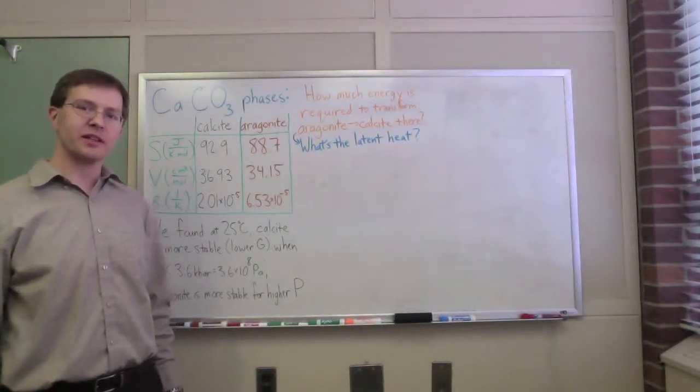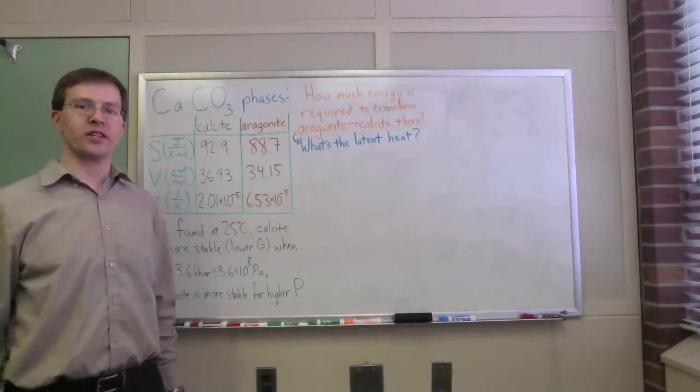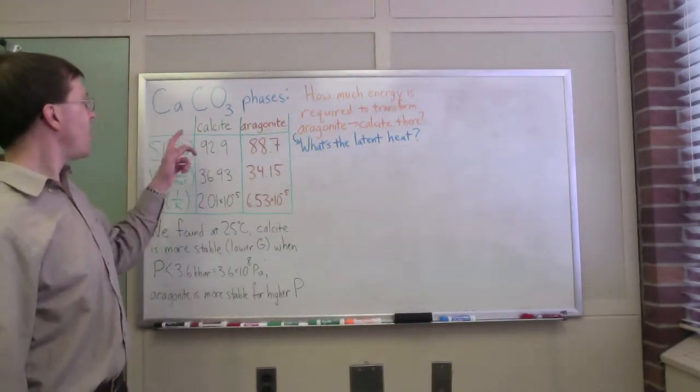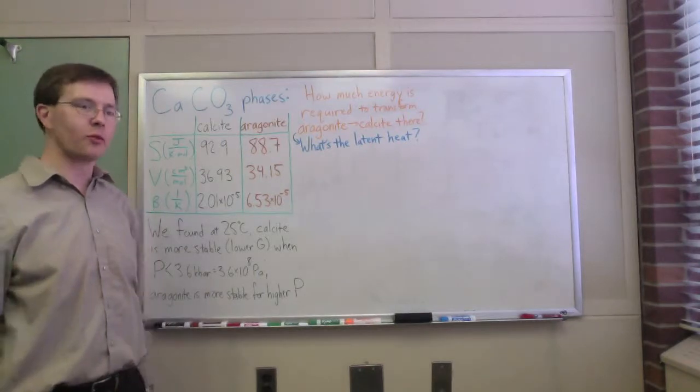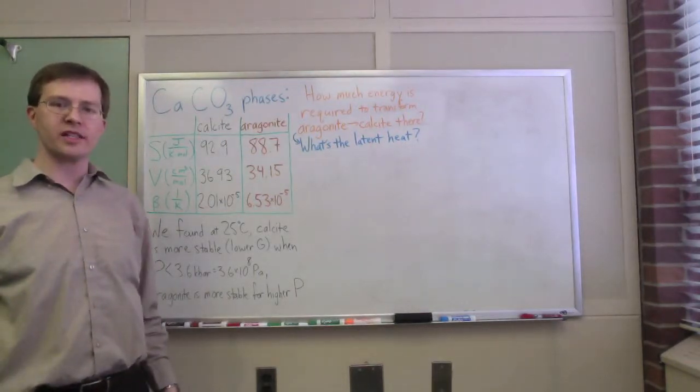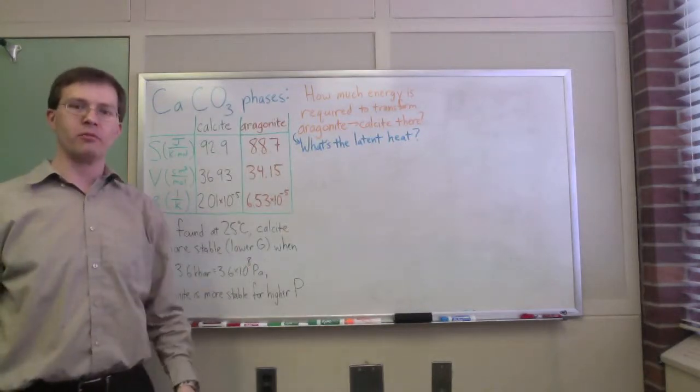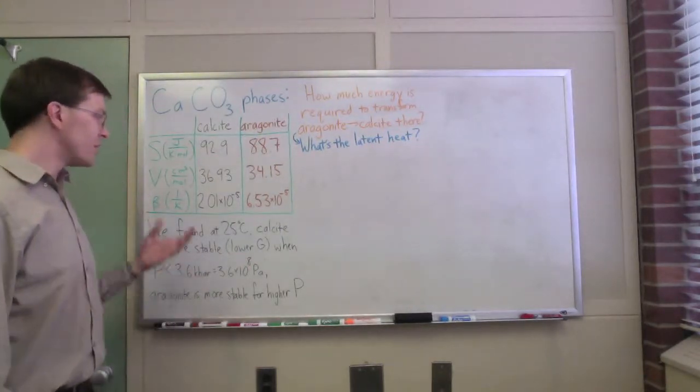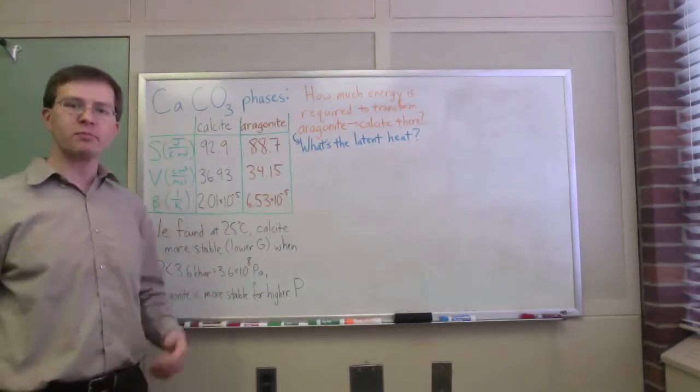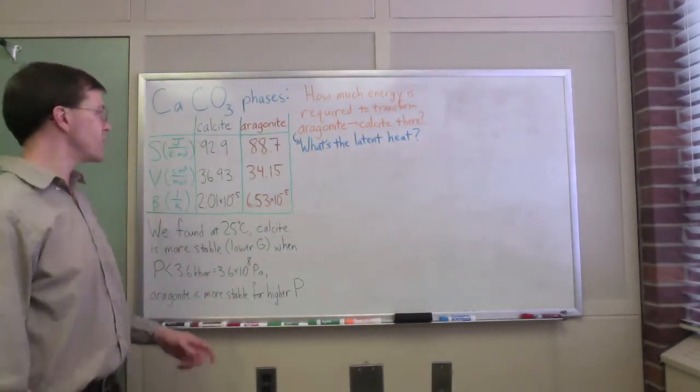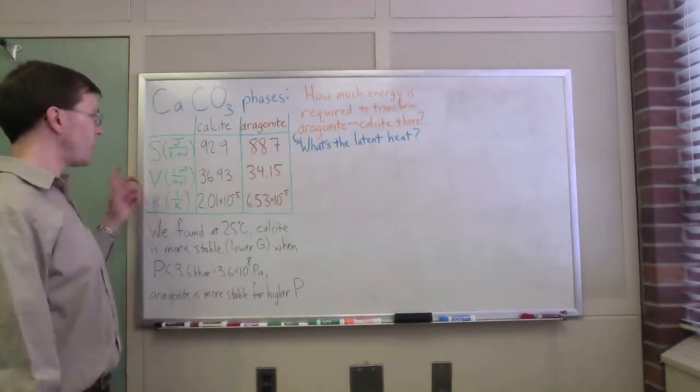In our thermal physics class recently we've been studying phase transitions. In particular, we looked at the phase transitions of calcium carbonate CaCO3, which has two solid phases corresponding to different crystal structures: calcite and aragonite. Clever experimentalists have gone and tabulated all sorts of great data about those.